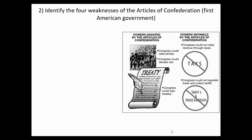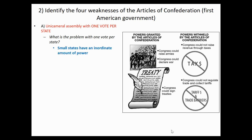The first national government of the United States was the Articles of Confederation — before the Constitution, there were the Articles. One weakness: it had a unicameral assembly, and each state only got one vote per state. The problem was small states like Delaware or Rhode Island had just as many votes as large states like Virginia — the same as Wyoming having equal power to California today. There was also no president of the United States, so if you're ever asked who was the first president under the Articles of Confederation, the answer is nobody.